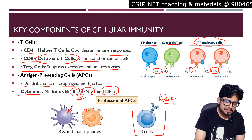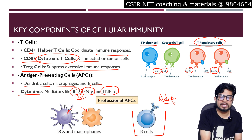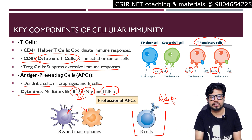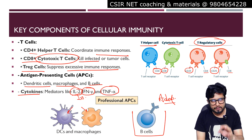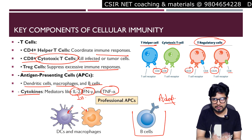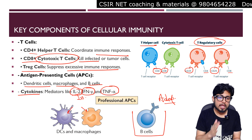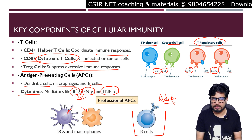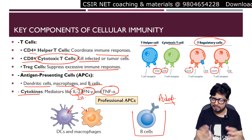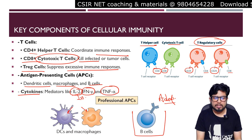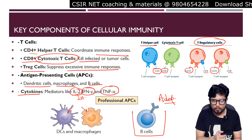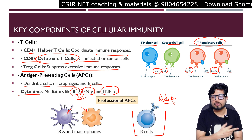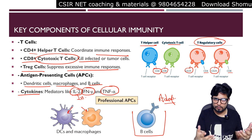In cell-mediated immunity, cytokines play a more predominant role than in humoral immunity. In the humoral part, the response is controlled by antibodies and the complement system. In cell-mediated immunity, cell-to-cell contact is the key, and for cell contact, interaction, and migration, we need cytokines and chemokines — specifically interleukin-2, interferon-gamma, and tumor necrosis factor alpha.